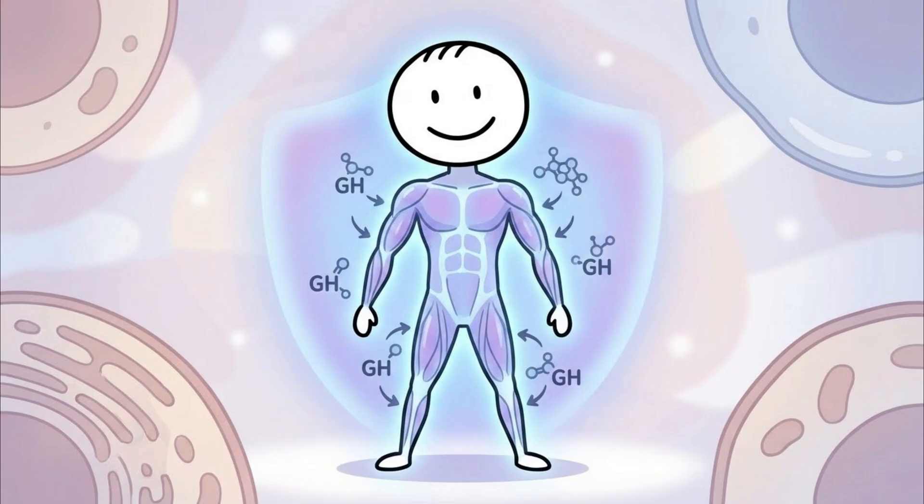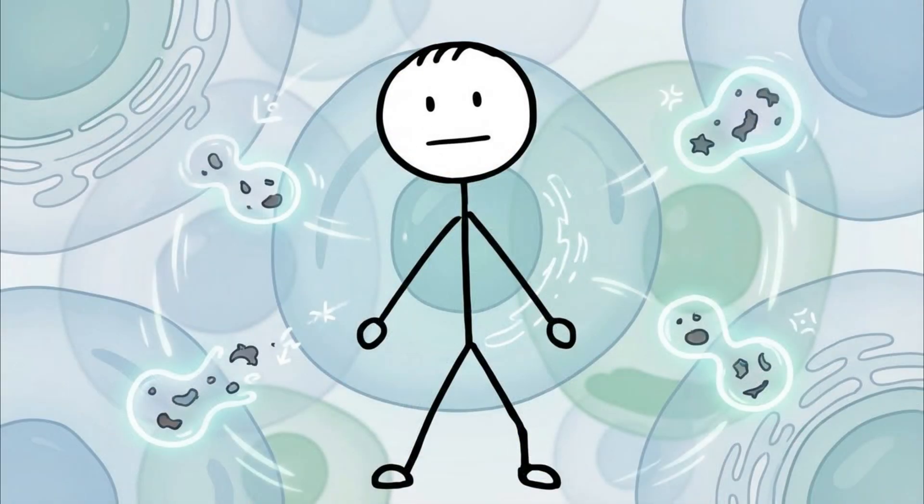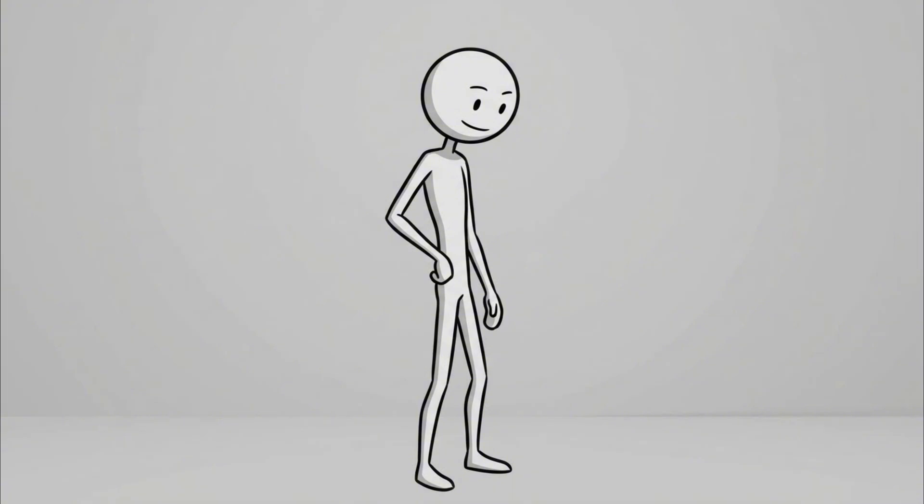Now contrast that with the alternative. A body that knows how to switch fuels instead of panicking. Hormones that signal clearly instead of fighting through noise. A nervous system that isn't hijacked by constant dopamine hits. This is metabolic flexibility. This is hormonal resilience. This is masculine energy restored at the biological level.